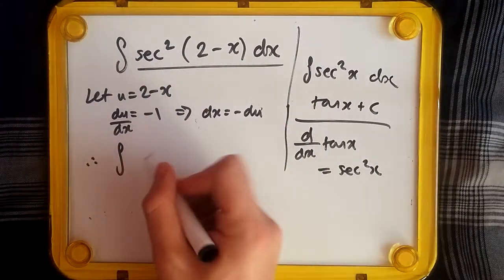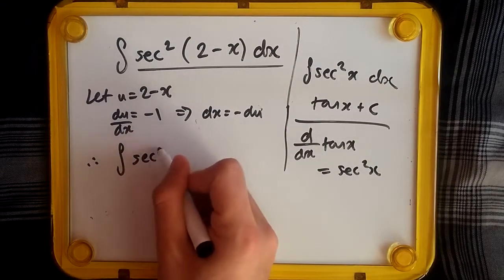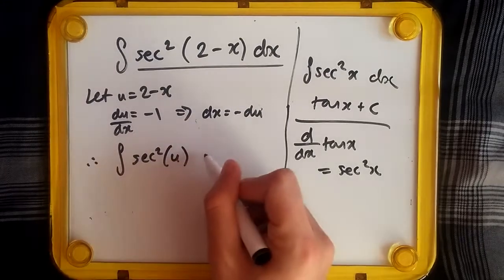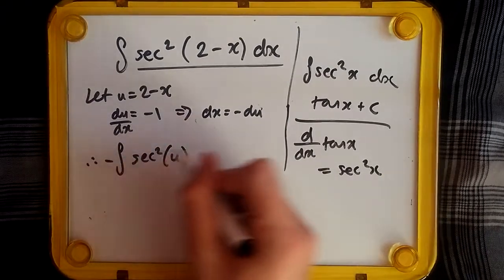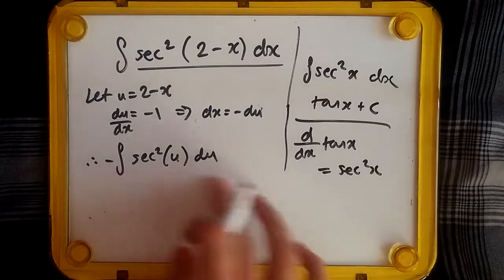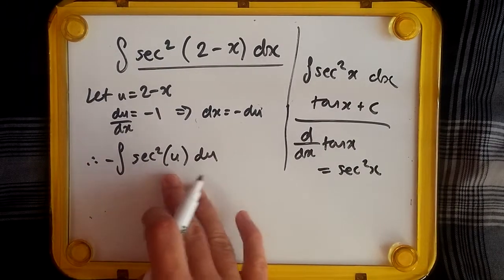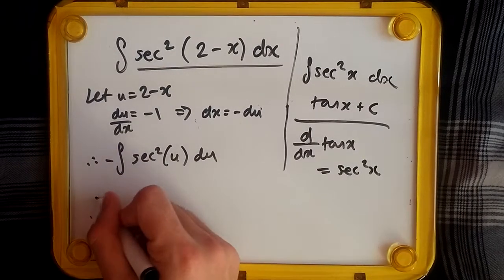So now we have the integral of sec²—replacing 2 minus x with u—and this becomes minus du. So put minus there, du. And of course this is straight up, as we said, tan x. So this will just be minus tan u + C.